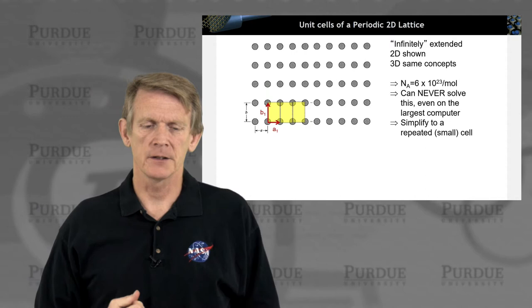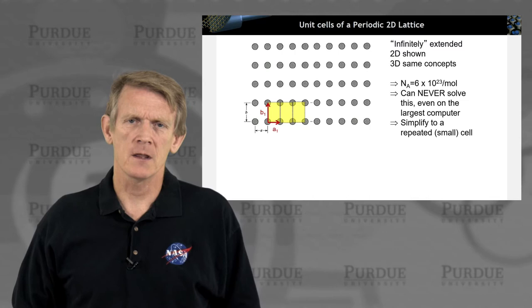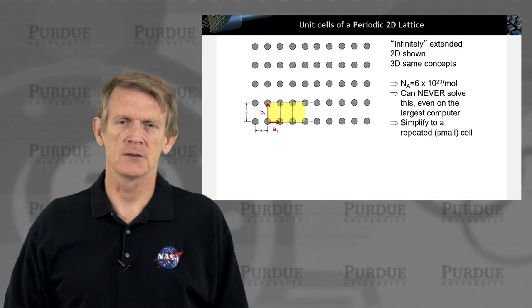So we need to have a way to abstract this almost infinite cell into a small repeated cell. So these small repeated cells might look like this, where you span two basis vectors here in 2D.